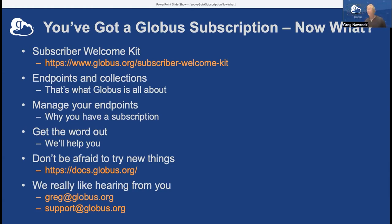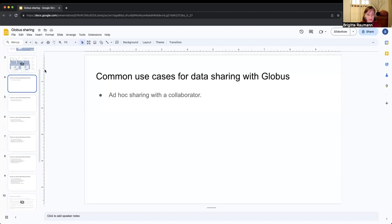I'm now going to turn it over to Bridget. One of the features of your subscription is that you can enable data sharing. Data sharing with Globus can be enabled on your endpoint, and it can also be enabled on a personal endpoint — so if your users are installing Globus Connect Personal on their laptop or Windows server in the lab, they can also enable data sharing. A full presentation on data sharing was given to this group about six months ago, so I won't go into too much detail, but happy to go into details for anyone new.